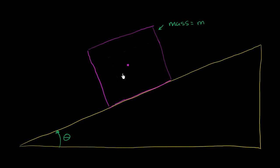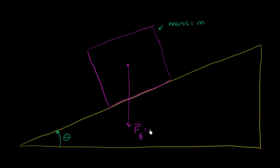Starting right at the center of this mass, the force due to gravity is going to be equal to the gravitational field near the surface of the Earth — we'll call that g — times the mass. So the force is m times g, and it's going to be directed downwards, or at least towards the surface of the Earth.